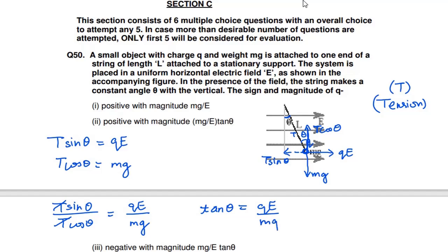Now you can find the value of q from here. So q value will be mg over E times tan theta. The value is positive. You can see the magnitude: mg/E into tan theta, which is the second one. Second one is the correct option out of these four.